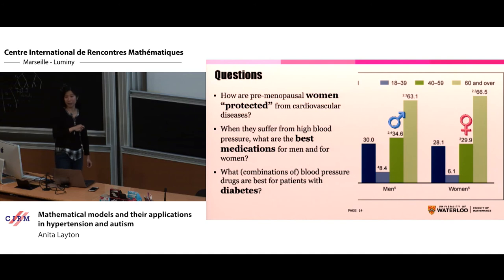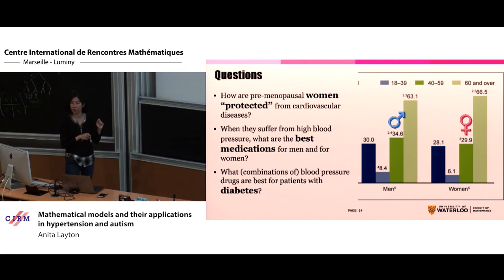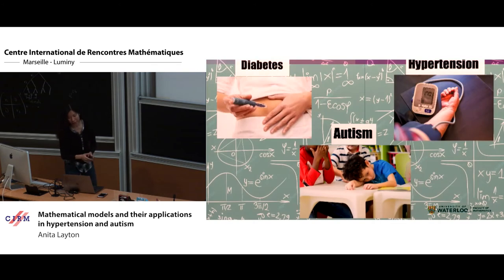I want to understand what are the best medications for men and women if they have high blood pressure, and why is it that one drug is better than others. And then if you have other diseases — people don't just have one disease when they're old enough. Hypertension drugs will not be the only ones you take. So what if you have other diseases, like diabetes? If you are taking diabetes drugs, what combination of blood pressure drugs is good for you? The story is different than when you're not taking other drugs at all.